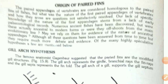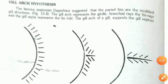The paired appendages of vertebrates are considered homologous to the paired fins of fish, but questions about the nature and origin of the first paired appendages are not satisfactorily resolved. A lack of early paleontological records contributes to this uncertainty. Ancient fishes have been discovered, but whether they were ancestral to modern forms or evolutionary offshoots remains debated, and various hypotheses have been proposed for the origin of paired fins.